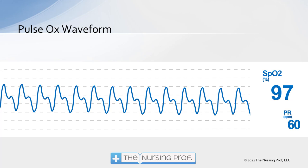The pulse ox is going to create a waveform — this waveform literally is the pulse. The way the pulse ox tells the difference between oxygen in arterial blood and oxygen in venous blood is by looking for that pulse. We want to see a pulse ox waveform, which indicates that the pulse ox is reading arterial blood rather than venous blood. You expect to see a waveform that looks something like this.